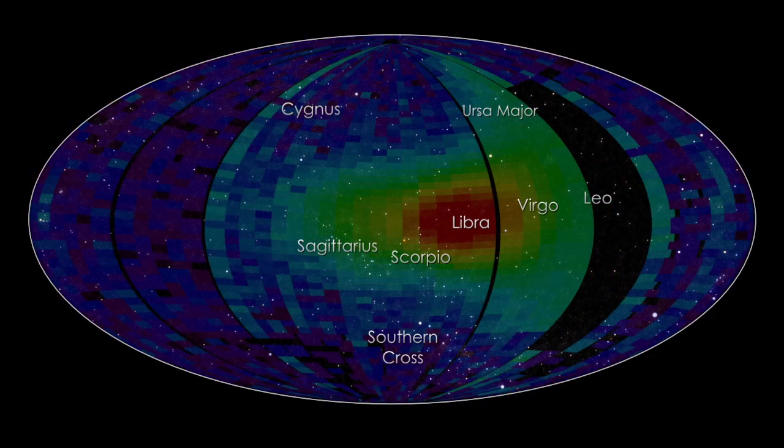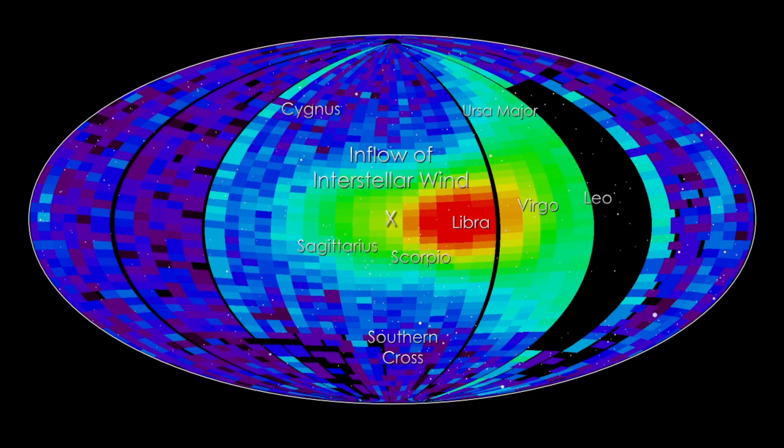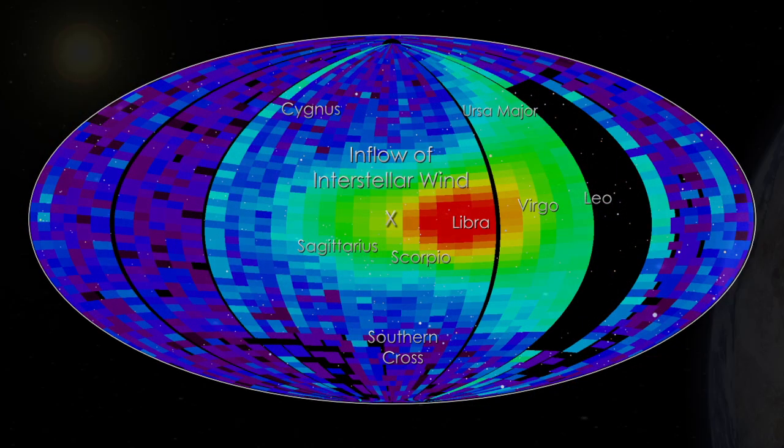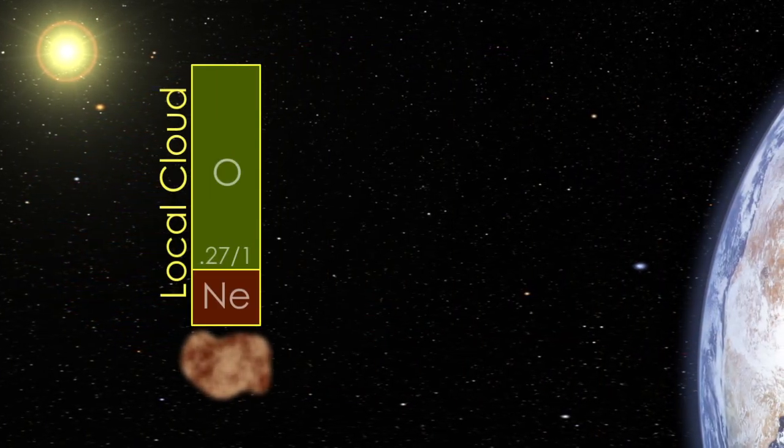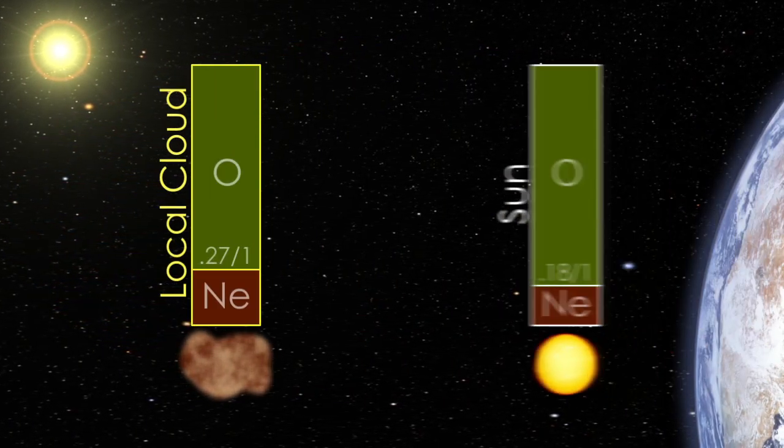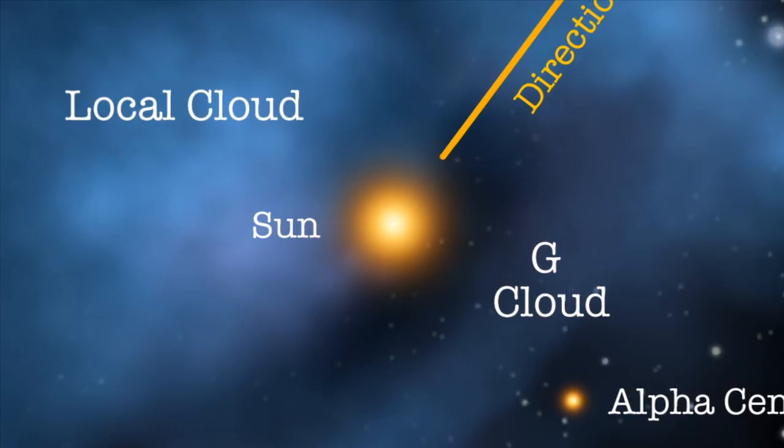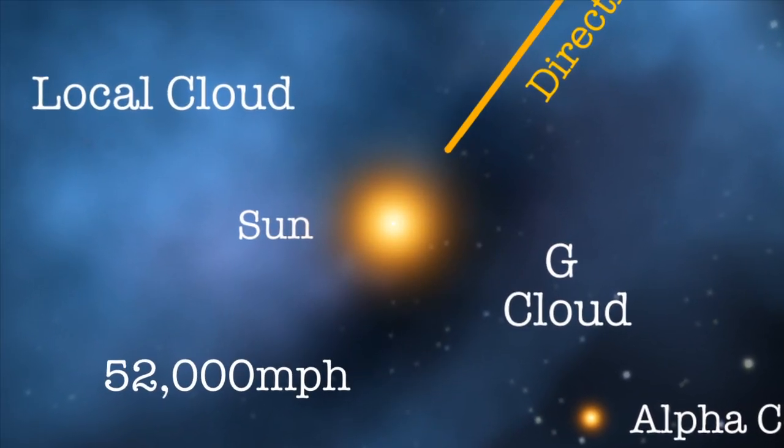IBEX has also measured ENAs from the interstellar wind, giving scientists a clearer picture of its composition. Surprisingly, it turns out that the local interstellar material is different from the Sun, and the wind is slower and coming from a different direction than previously thought.